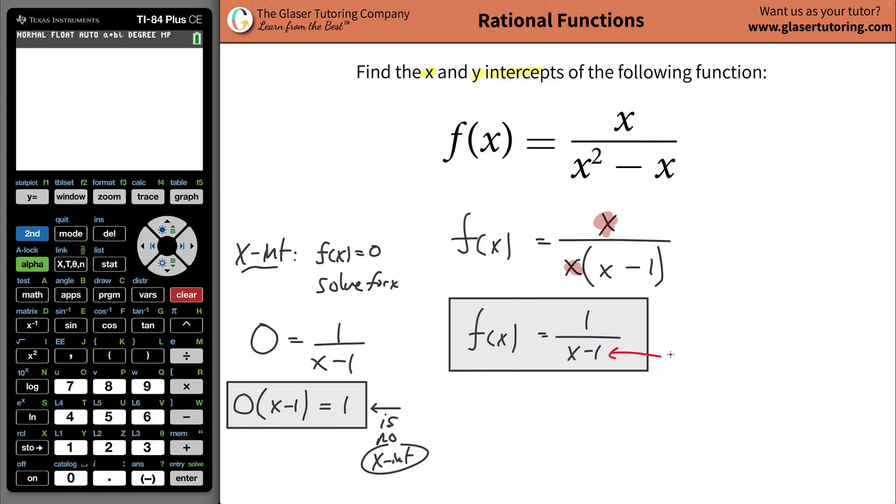Anytime you have a bottom heavy function, there's always a horizontal asymptote at y equals 0. In other words, there is no x intercept. It doesn't cross the x axis. So that's the answer. There is no x intercept.